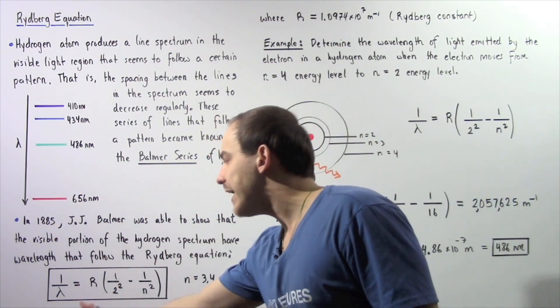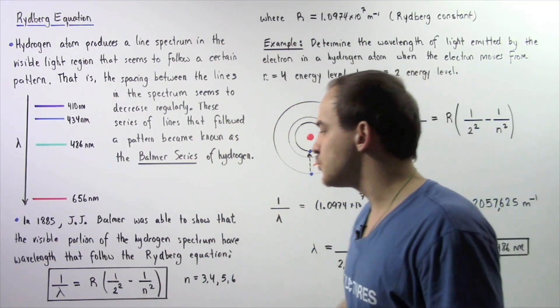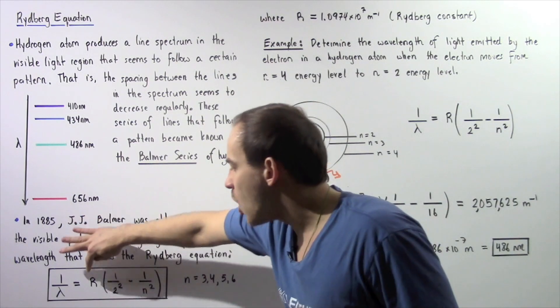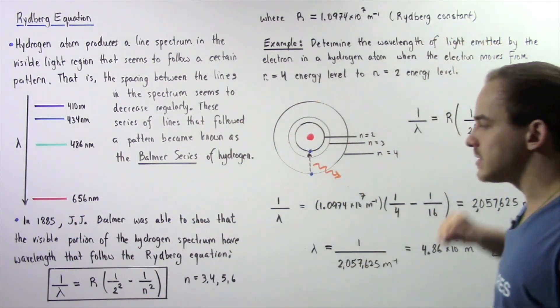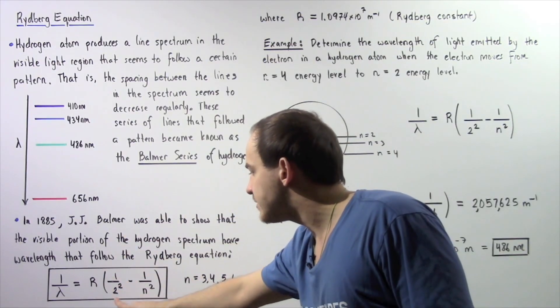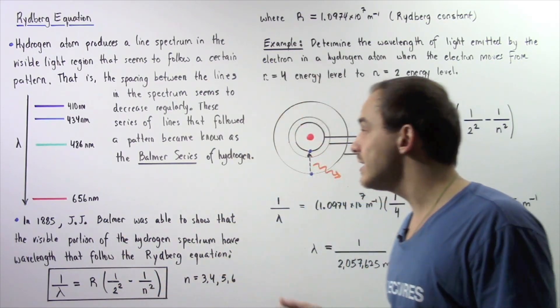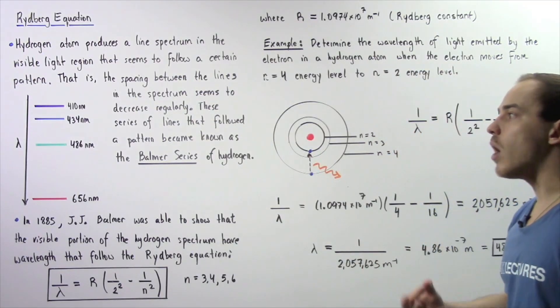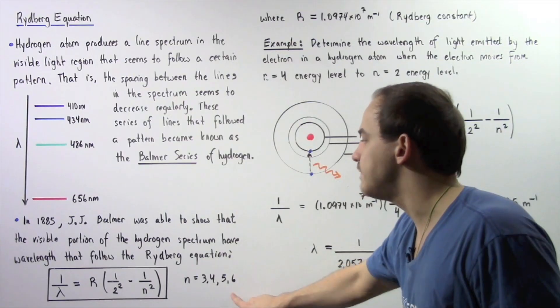So 1 divided by the wavelength of the line that is emitted by our hydrogen atom is equal to R, a constant that is known as the Rydberg constant, multiplied by 1 divided by 2 squared minus 1 divided by n squared, where n is simply the principal quantum number. It works for n equals 3, 4, 5, and 6.